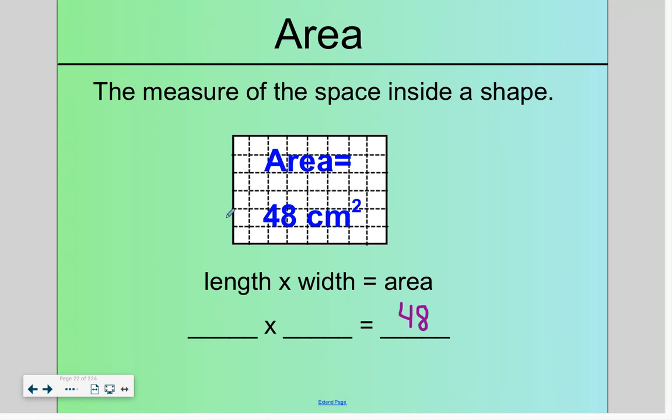We have one, two, three, four, five, six centimeters going vertically and one, two, three, four, five, six, seven, eight centimeters going horizontally. So we can get an area of 48 by multiplying six times eight.